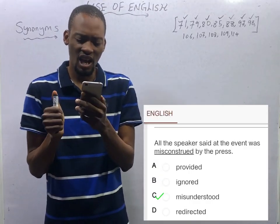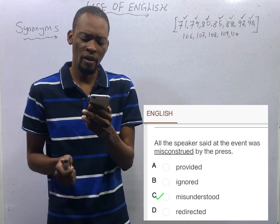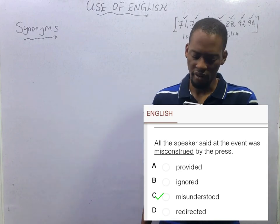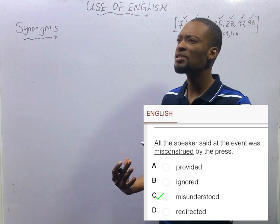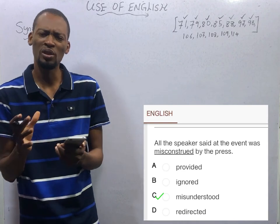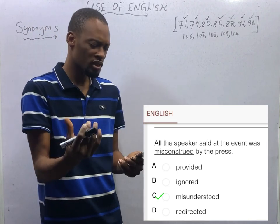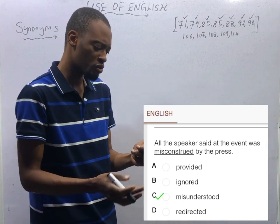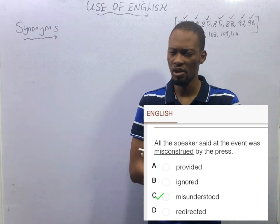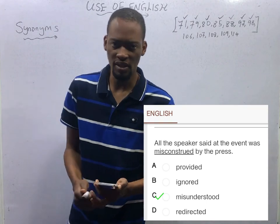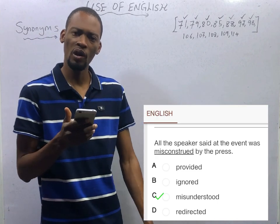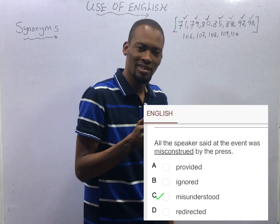'All that the speaker said at the event was misconstrued by the press.' Does he mean provided, ignored, misunderstood, or redirected? To misconstrue something means to misinterpret, to mistranslate, or to understand something erroneously. If all that the speaker said was misconstrued by the press, it means misunderstood. That makes option C the correct option.